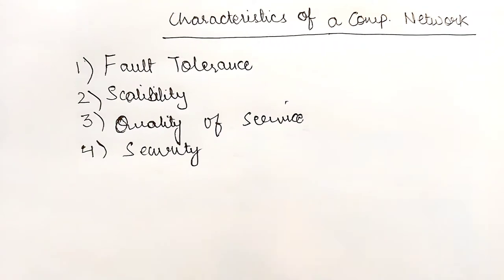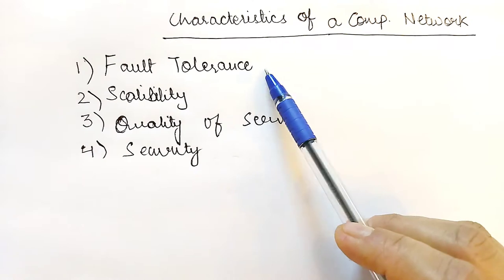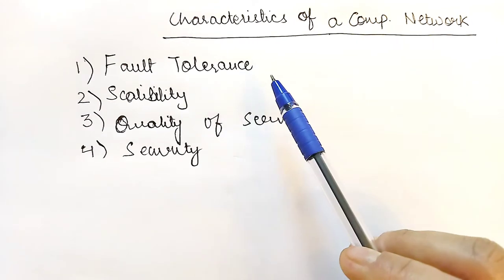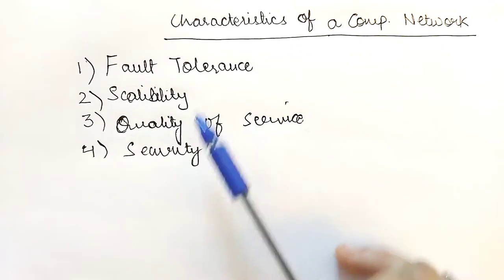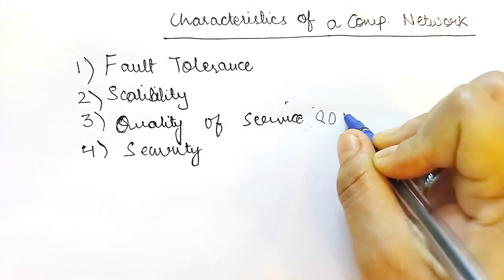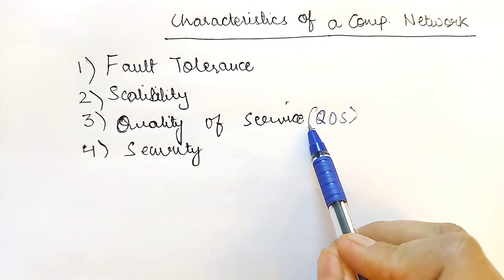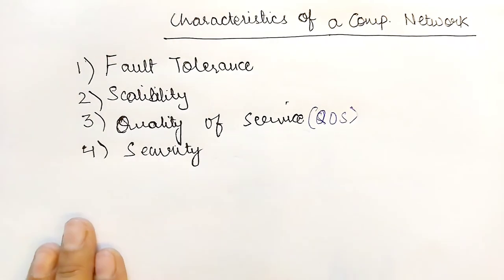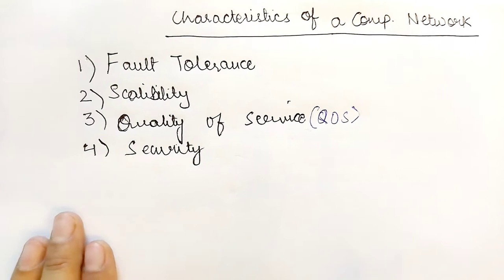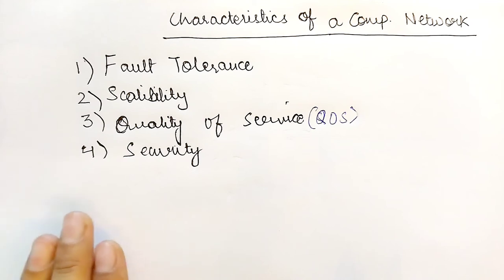Hello all the students. Today we are going to study about the characteristics of a computer network. There are four important characteristics that every computer network must have: fault tolerance, scalability, quality of service which is also known as QoS, and security.